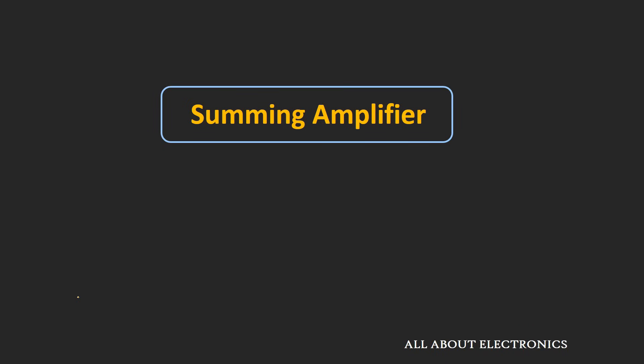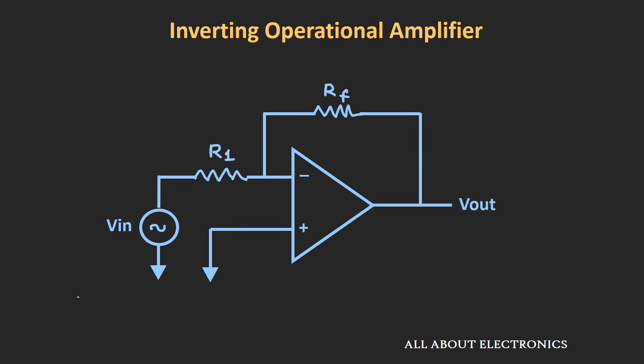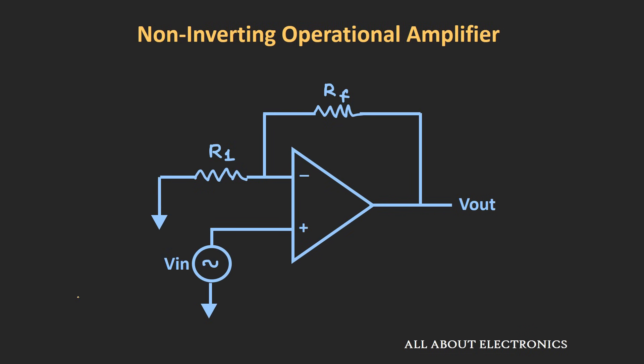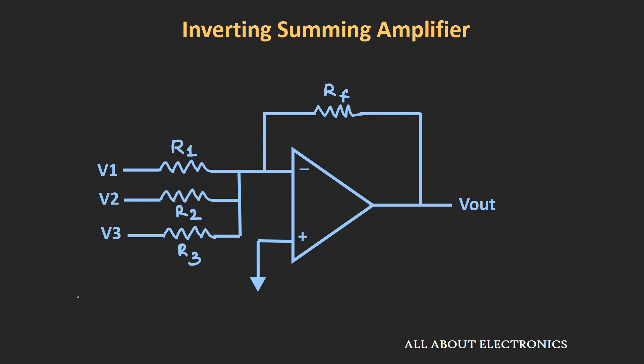Hey friends, welcome to the YouTube channel all about electronics. In this video we will see how to use an op-amp as a summing amplifier and how we can add different input voltages. In earlier videos on inverting and non-inverting op-amp configurations, we applied a single input to one terminal. Now we will apply multiple inputs to either the inverting or non-inverting terminal and see how this configuration works as a summing amplifier.